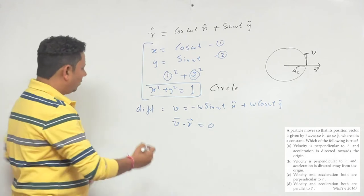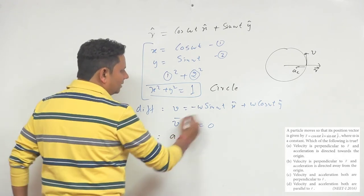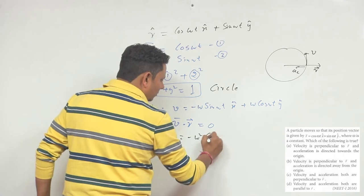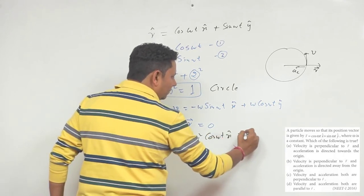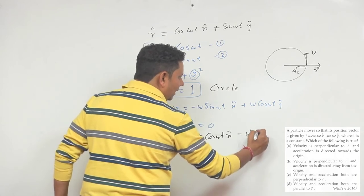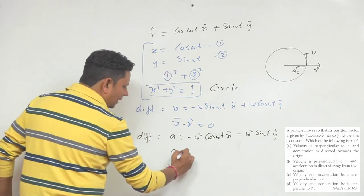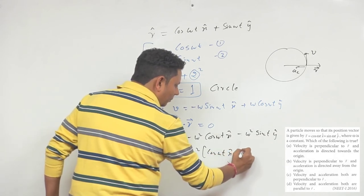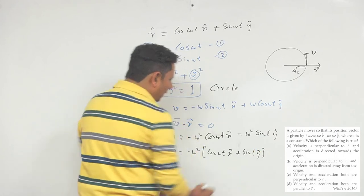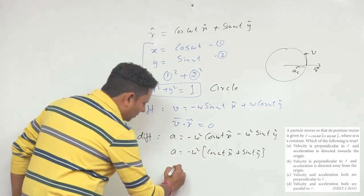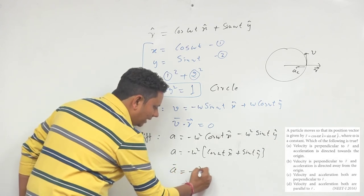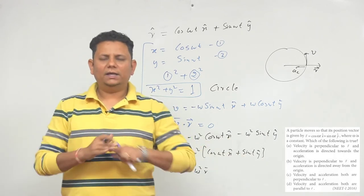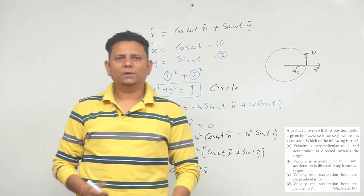Now differentiating velocity, we get the acceleration vector: a = −ω² cos(ωt) x̂ − ω² sin(ωt) ŷ. Taking −ω² common, this becomes a = −ω² [cos(ωt) x̂ + sin(ωt) ŷ] = −ω² r. This means acceleration and r are along the same line but in opposite directions — acceleration points toward the origin. So option A is the correct answer.